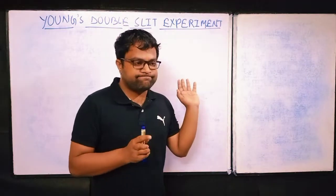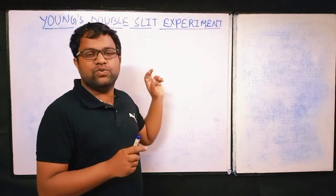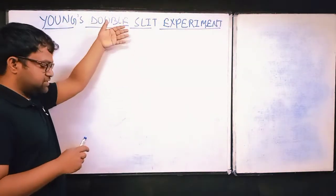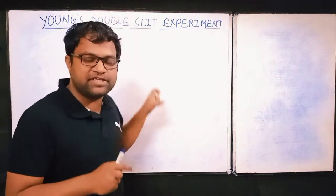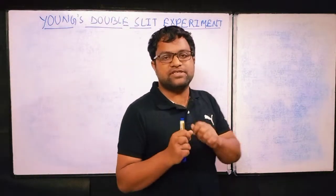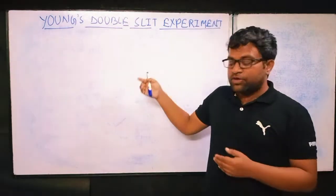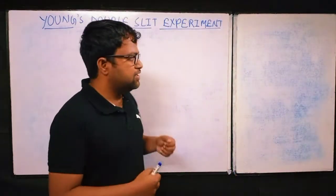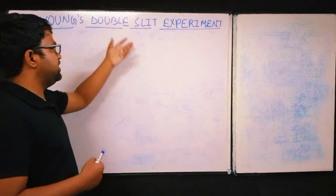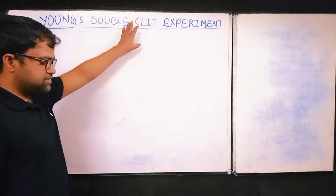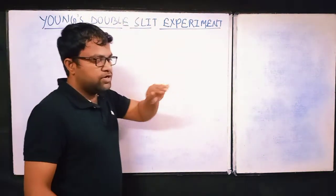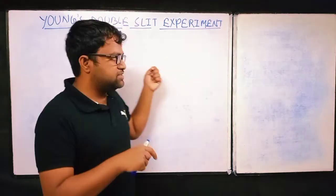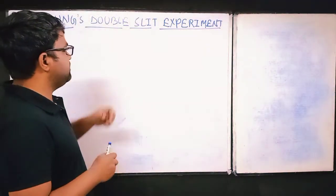In this discussion of Young's double slit experiment, we will focus on the wave nature of light and how Young proved that light behaves like a wave. So, how can you say from this experiment that light is a wave?